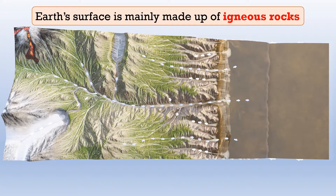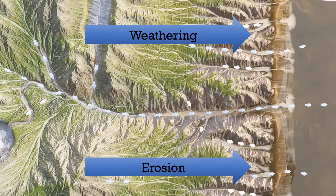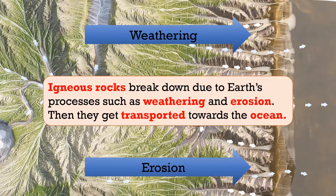Our earth's surface is actually made up of igneous rocks. Our earth suffers through some nature's processes such as weathering and erosion. This includes rain, thunderstorms, snowing and many more. All these processes will actually break down the igneous rocks on the surface. Then the rocks will get transported by wind, by water, towards the ocean.